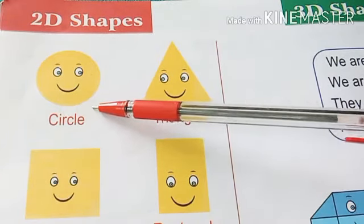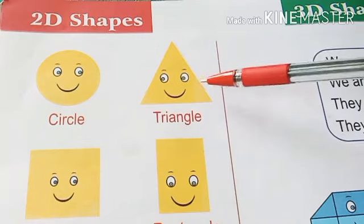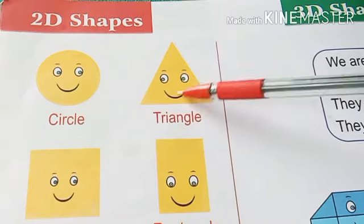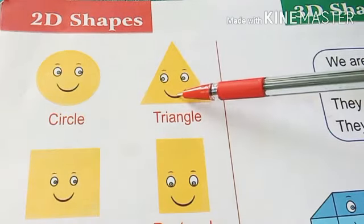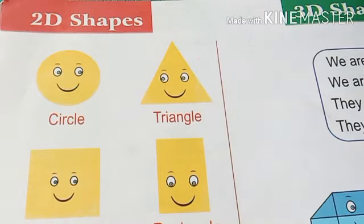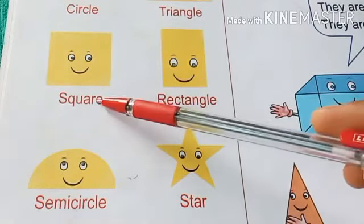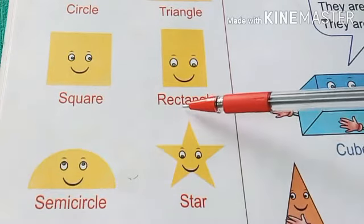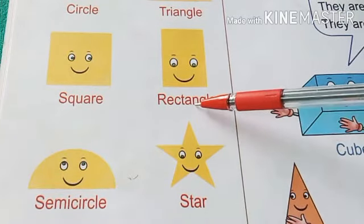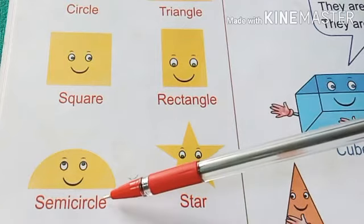This is a circle. This is a triangle. This is a square. This is a rectangle. This is a semicircle.